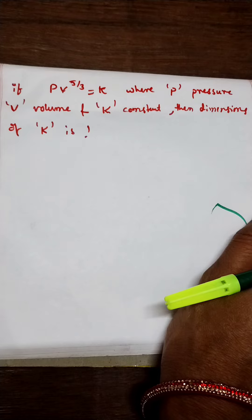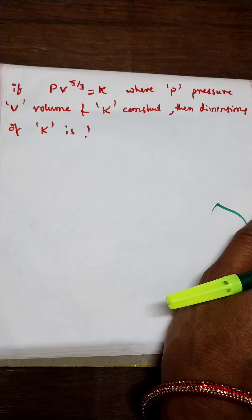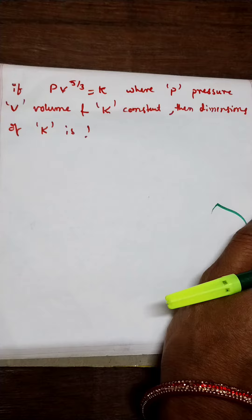See, this is a previous question. If P V to the power of 5 by 3 equals K, what are the dimensions of K, where P is pressure and V is volume?